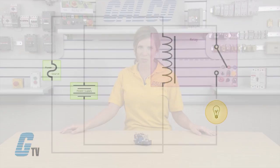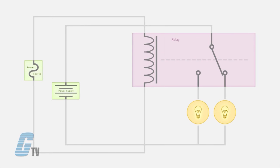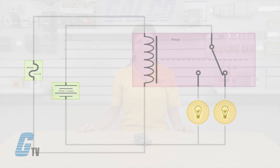Single throw means that the pole has an open state and a closed state. The relay will alternate between states when actuated. A double throw pole can control two circuits and alternate between one circuit being open while the other is closed and vice versa when actuated.